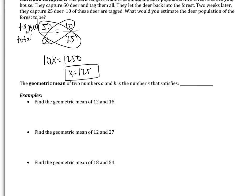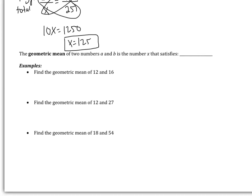Last thing that we're going to do is geometric mean, which is putting together ratios and proportions. So the geometric mean of two numbers a and b is the number x that satisfies this proportion. x is used twice, and a and b are on the diagonal. So let's do an example. Find the geometric mean of 12 and 16. So x is twice, that's what we're looking for, and then we have 12 and 16.